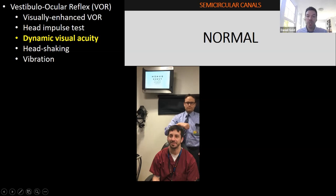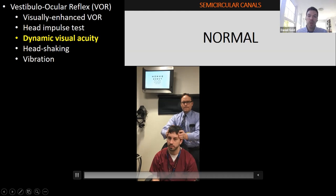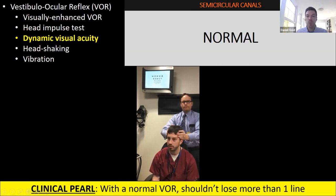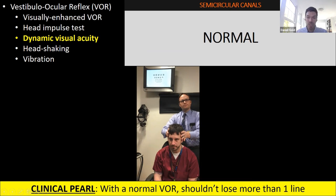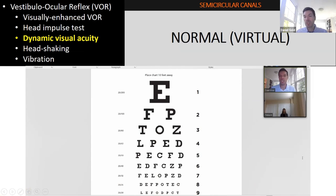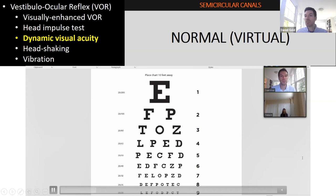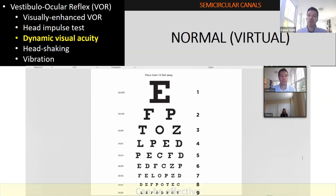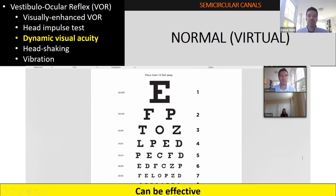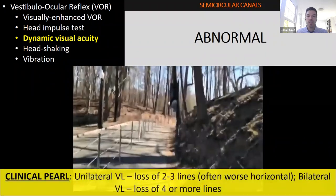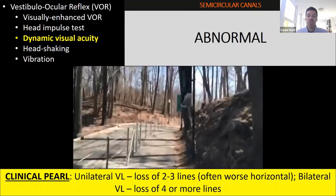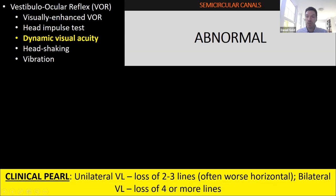For dynamic visual acuity, the patient reads the eye chart while shaking their head — he could read the 20/20 line and dropped only one line to 20/25, which is fine. You shouldn't lose more than one line. This uses best-corrected acuity, both eyes open; you care about the relative drop between static and dynamic visual acuity. With bilateral vestibular loss you typically lose four or more lines; with unilateral, usually two to three lines, worse horizontally.